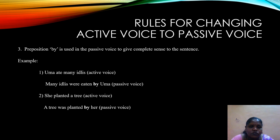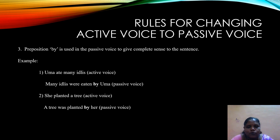The third rule is that we should use the preposition 'by' in passive voice to give complete sense to the sentence. Without 'by,' the sentence may look incomplete. For example, 'Uma ate many items' — to make it correct in passive we use 'by.' And 'She planted a tree' becomes 'A tree was planted by her.' We use the preposition 'by' to make complete sense in the sentence.